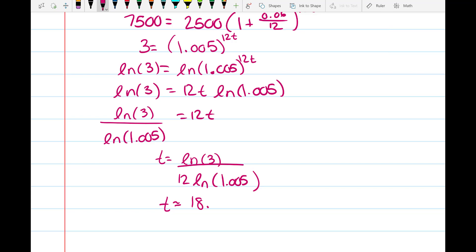So what this means is that if you compound $2500 monthly with 6% interest, it'll take you about 18 and a quarter years to get to $7500.